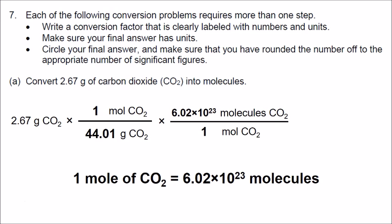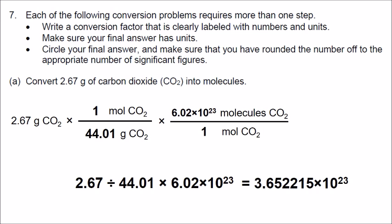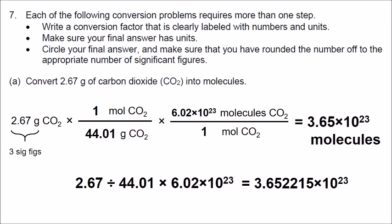We have set up our two conversion factors correctly. Now we do the math: 2.67 divided by 44.01 times 6.02 times 10 to the 23rd. Our calculator gives us 3.652215 times 10 to the 23rd. Since we began with 2.67, which has 3 significant figures, our answer is rounded off to 3 sig figs: 3.65 times 10 to the 23rd molecules of carbon dioxide.